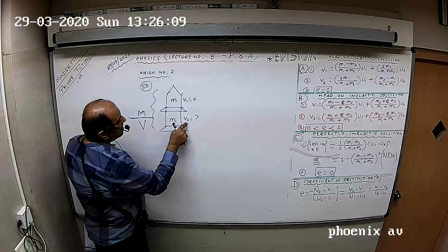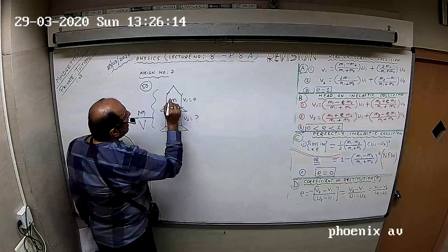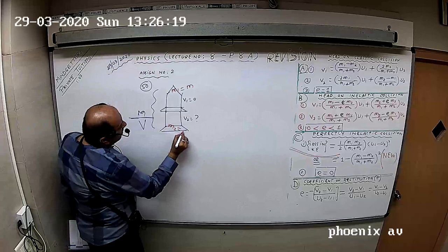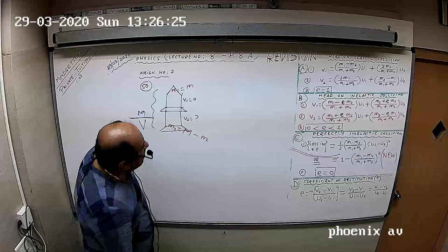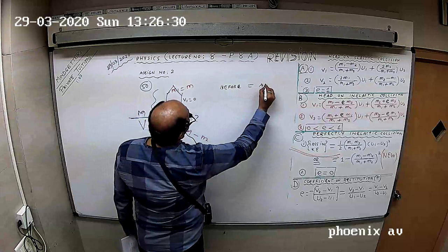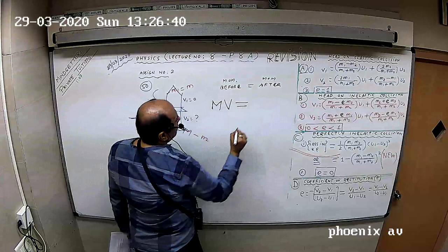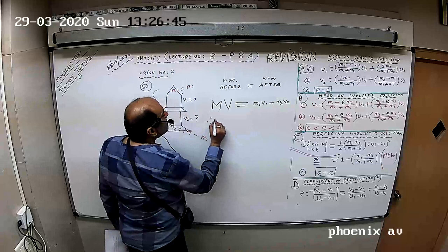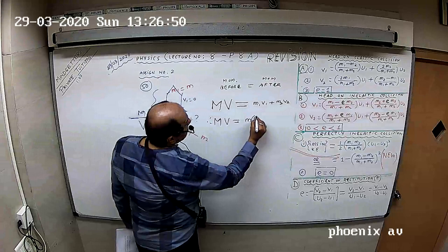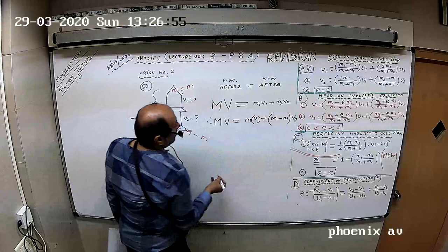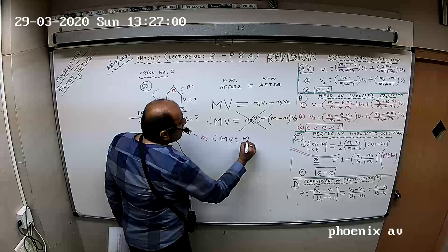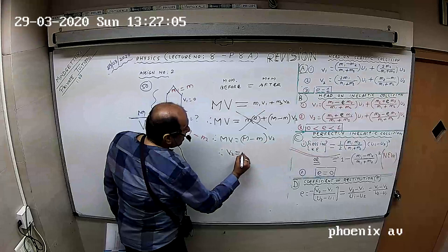The whole spacecraft of mass M has velocity V. One part is stationary. Apply common sense: if I call this mass M, what is the other mass? It is M minus M. Now momentum before equals momentum after. Mass into velocity equals mass 1 into velocity 1 plus mass 2 into velocity 2. So MV equals M into 0 plus (M minus M) into V2.